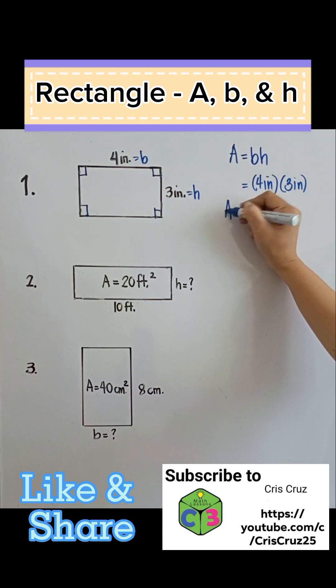Area now is 4 times 3, which is 12, and then inch times inch is inches squared. So the area of this rectangle is 12 inches squared. Next one,